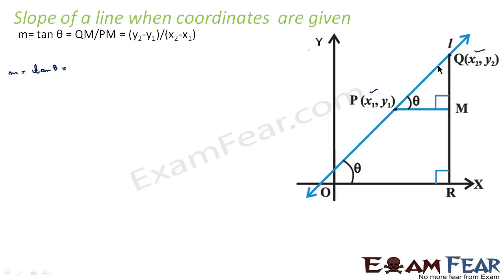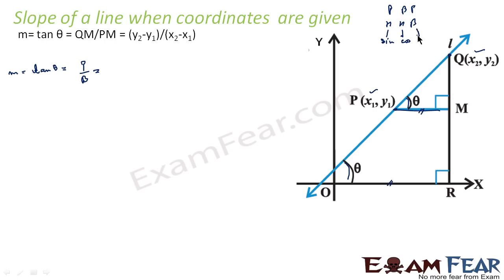Since m = tan θ, where θ is the angle made by the line with the positive x-axis, we draw a parallel line to establish the angle. Line PM is parallel to line QR. Because these lines are parallel, the corresponding angles are equal, so this angle is also θ. We know that tan θ = perpendicular / base from trigonometry — tan is p by b — so tan θ = QM / PM.